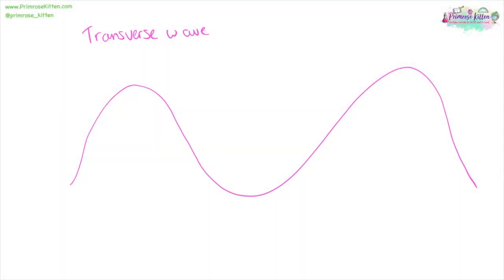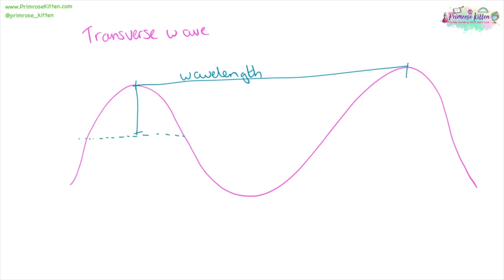A transverse wave goes up and down. From one point to another point — and this doesn't matter whether it's from the top to the bottom or from the middle to the middle — we have the wavelength. The amplitude is measured from the middle to the top, or from the middle to the bottom. The direction of movement is up and down; this could also be called the direction of oscillation. And the direction of energy transfer is sideways.